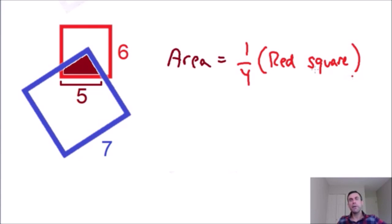And we know that the area of the red square is equal to the side length squared. So we know it has a side length of six. So it's equal to six squared. And we have to multiply this by one quarter. So one quarter times six squared is equal to nine. So we know that the area of the dark red shaded region is exactly equal to nine.